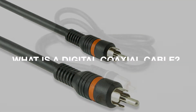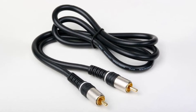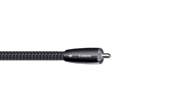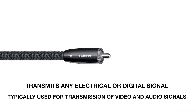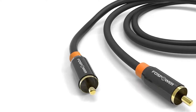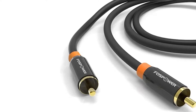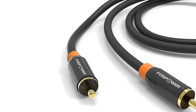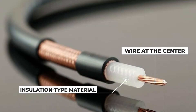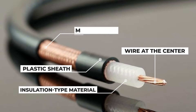What is a digital coaxial cable? Now that we know what coaxial speaker cables are, have you ever heard about a digital coaxial cable? A digital coaxial cable is one that transmits any electric or digital signal. Typically, these cables are used for the transmission of video and audio signals. Though they're not digital internally, they're efficient at transmitting a digital signal via electric pulses. The construction of digital coaxial cables is identical to that of standard coaxial cables — it shows a wire at the center, which is enclosed by an insulation material, a plastic sheet and a metal shield. What's more is that they can handle a broad range of electric frequencies.